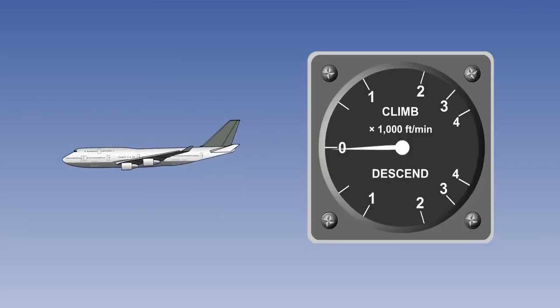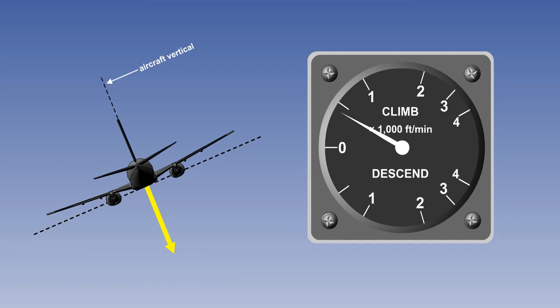The final point to note on the IVSI is that as the dashpot senses vertical acceleration, turbulent flying conditions and banked turns can give false IVSI indications. For example, in a steep level turn, the IVSI will show a false rate of climb.